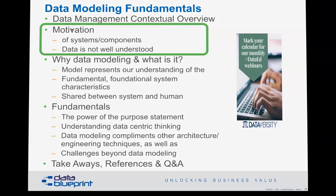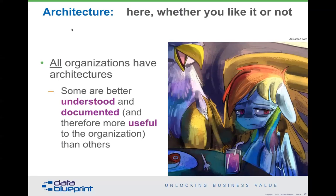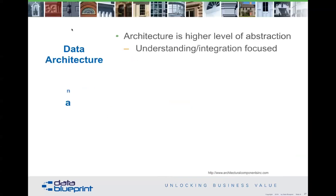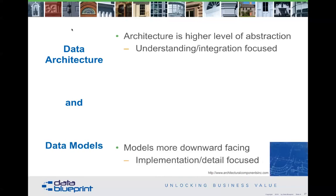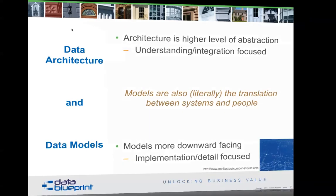Data modeling is really pretty fundamental. From an architecture perspective: architecture is here whether you like it, have it, or not. Anything reasonably complex is going to have an architecture. The question is: do you understand it, and do you have it documented? Because if it's not understood and not documented, it cannot be useful to you. Data architecture talks about higher levels of abstraction — it's an integration-focused activity. Data models are more downward-facing, detail or implementation focused. The models are literally the translation between people and systems.